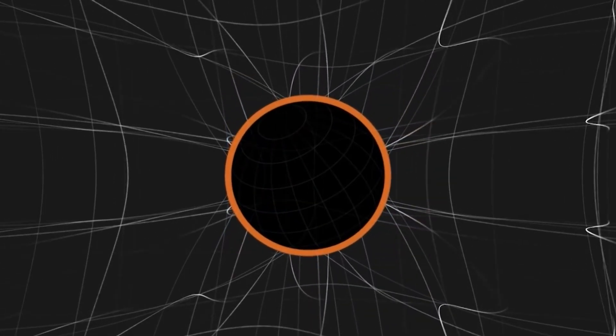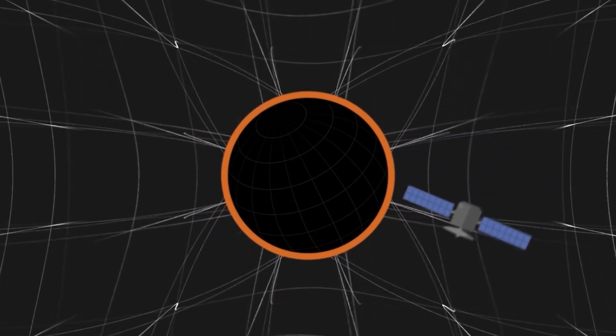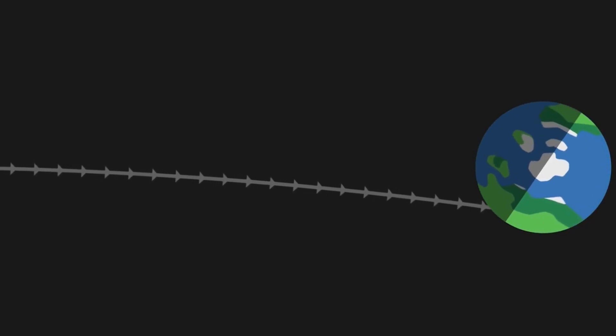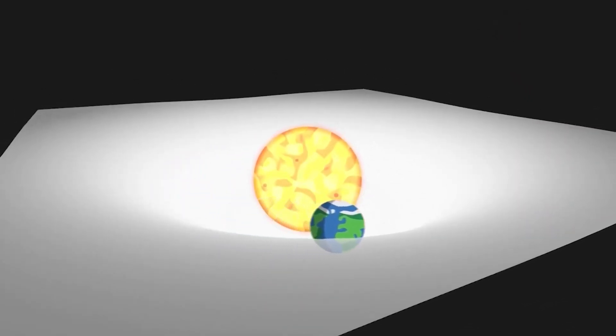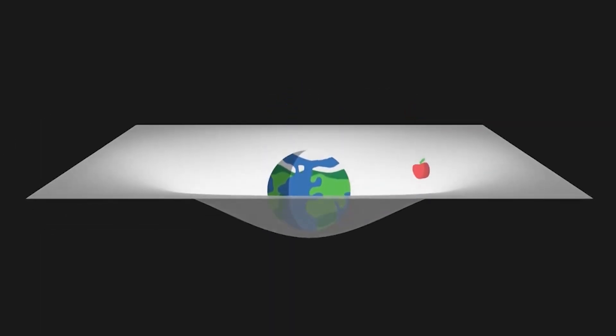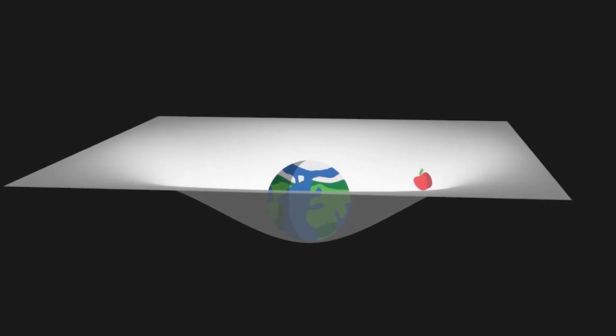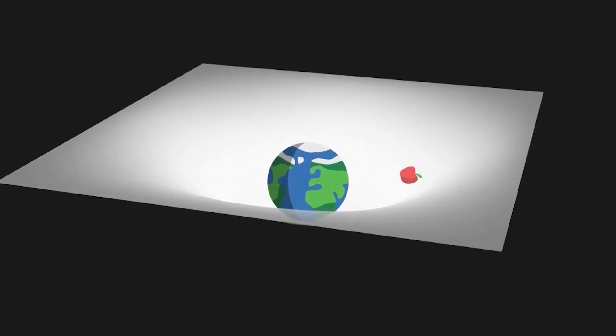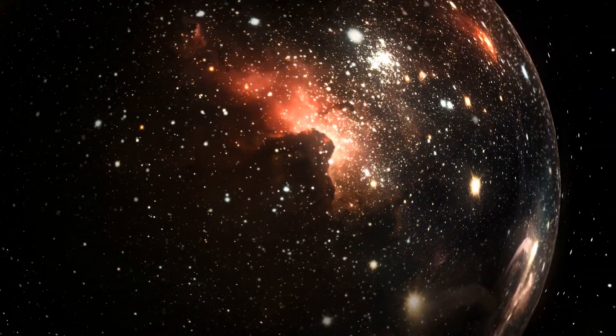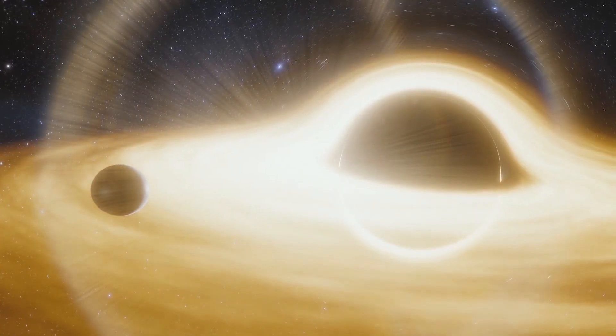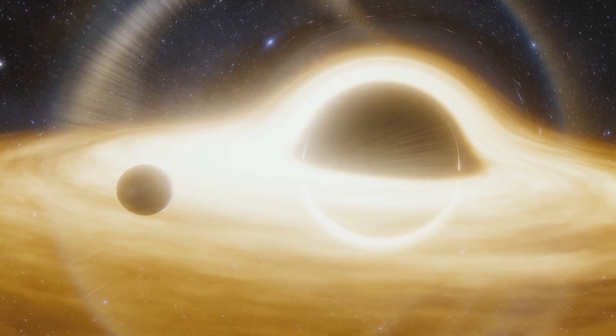At its heart, general relativity is a profound and elegant description of the gravitational force, not as a force in the traditional sense, but as a consequence of the curvature of space-time, caused by mass and energy. Einstein's insight was that what we perceive as the force of gravity, in fact arises from the bending of space and time. According to general relativity, massive objects like stars and planets warp the fabric of space-time around them, and other objects move along these curves. This is often visualized as a heavy ball placed on a trampoline, distorting the fabric and causing smaller balls to spiral inward. This curvature dictates how objects move in space, and how time flows, and these effects become more pronounced as the mass of an object increases, or as one gets closer to it.